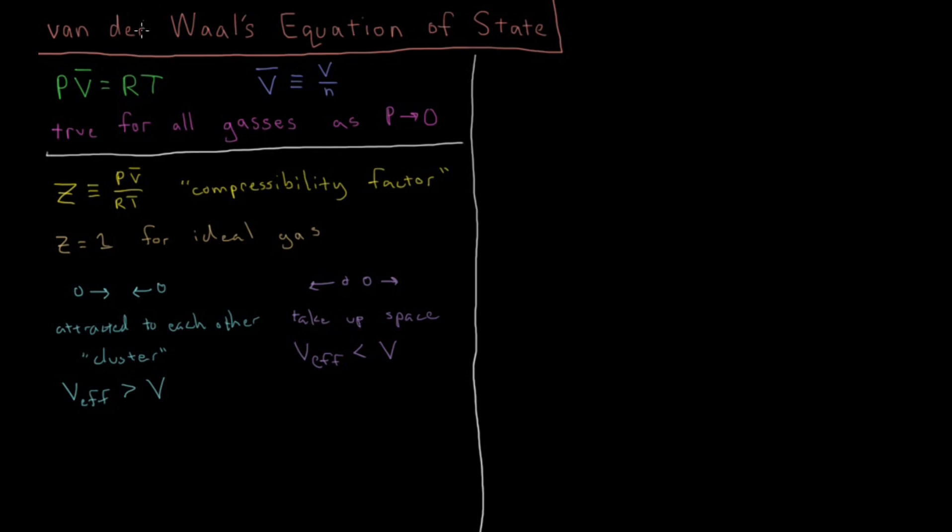So the first kind of approximation beyond the ideal gas law, which takes both of these factors into account, is the van der Waals equation of state. And the van der Waals equation of state can be stated as a correction to the ideal gas law. You have P plus a parameter a over V bar squared, this whole term, times V bar minus a second parameter b equals RT. So we see that same kind of structure. Now it's P plus something times V bar minus something equals RT.